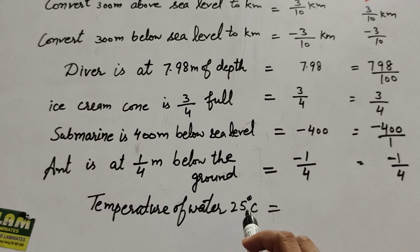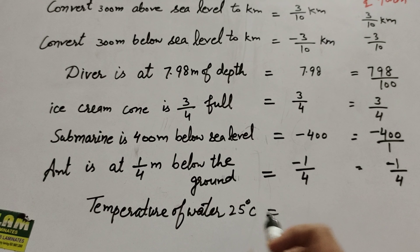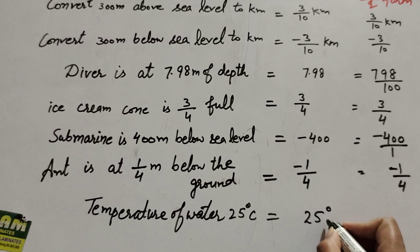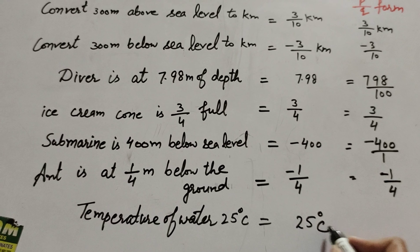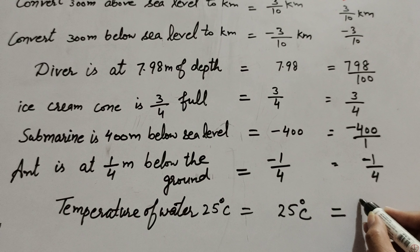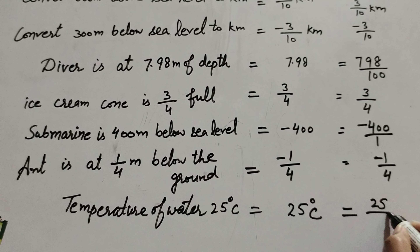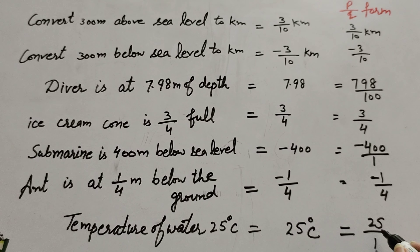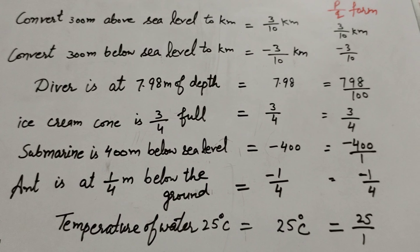The temperature of water is 25 degrees Celsius. Here 25 is a whole number. We also write it in p over q form by writing 1 in its denominator: 25 over 1 is a p over q form.